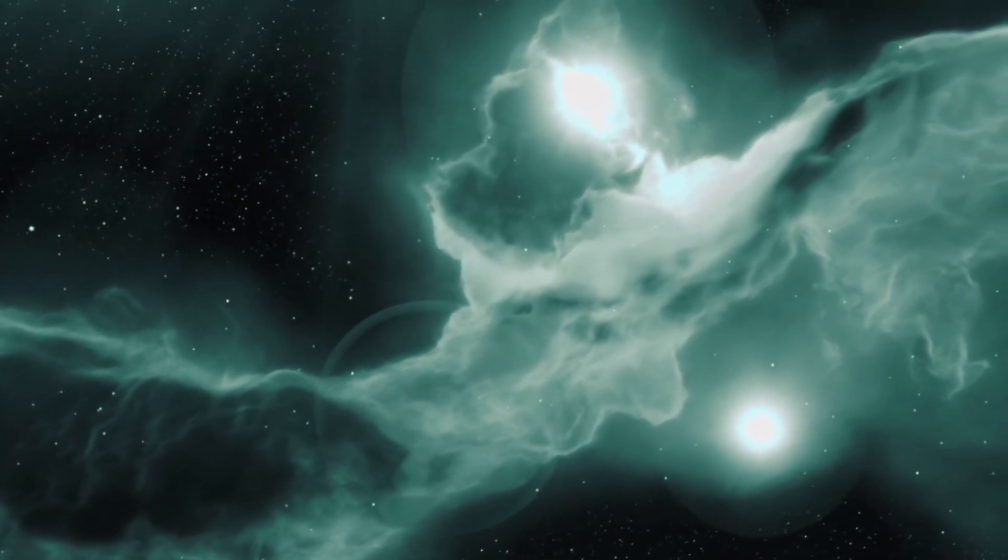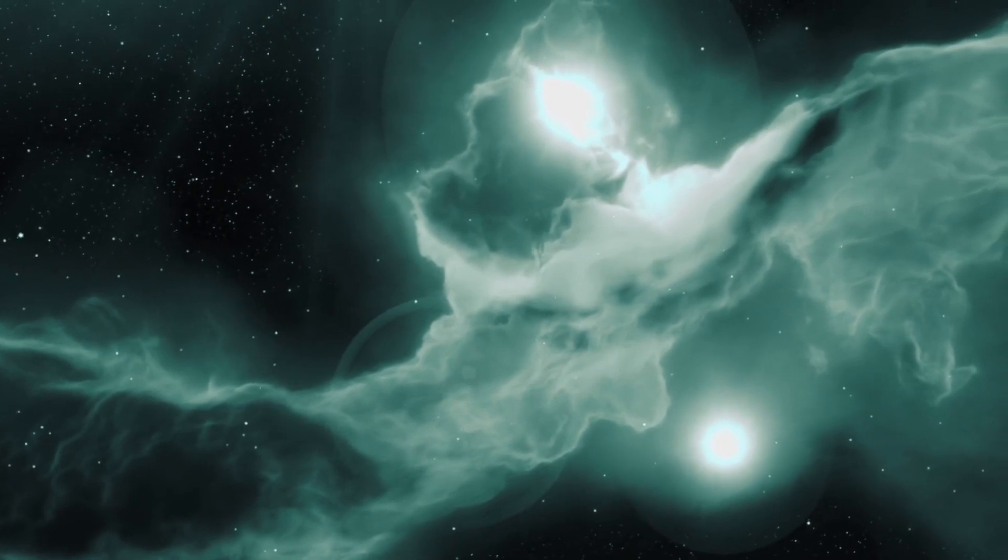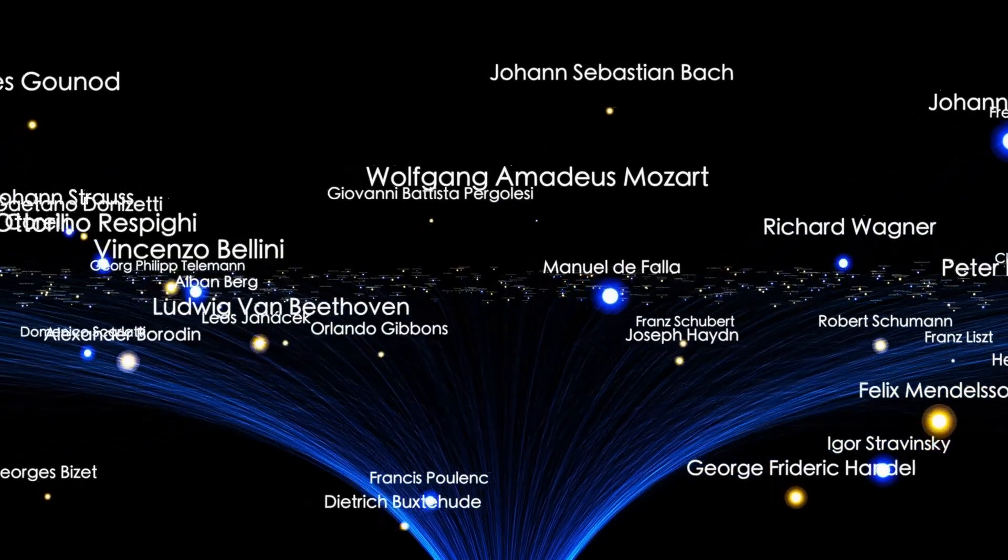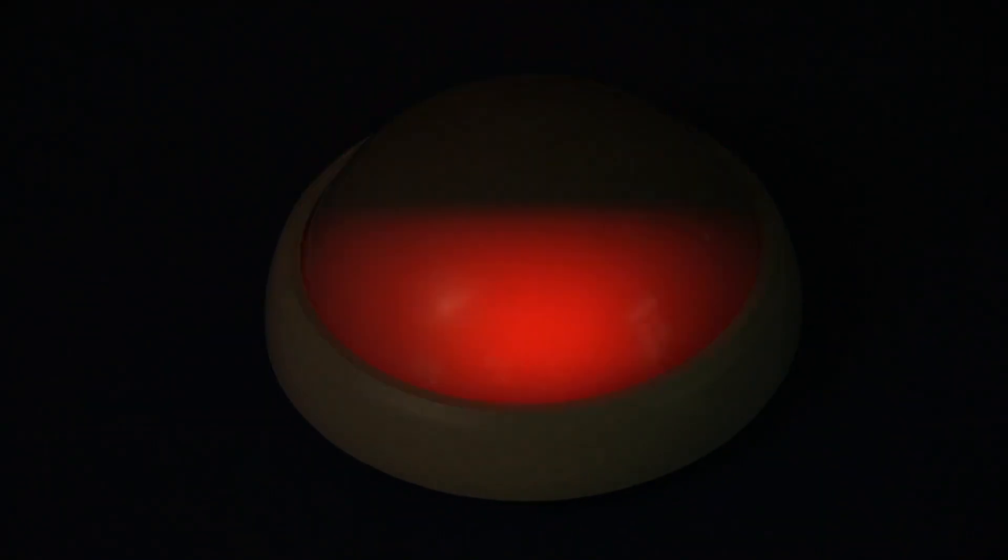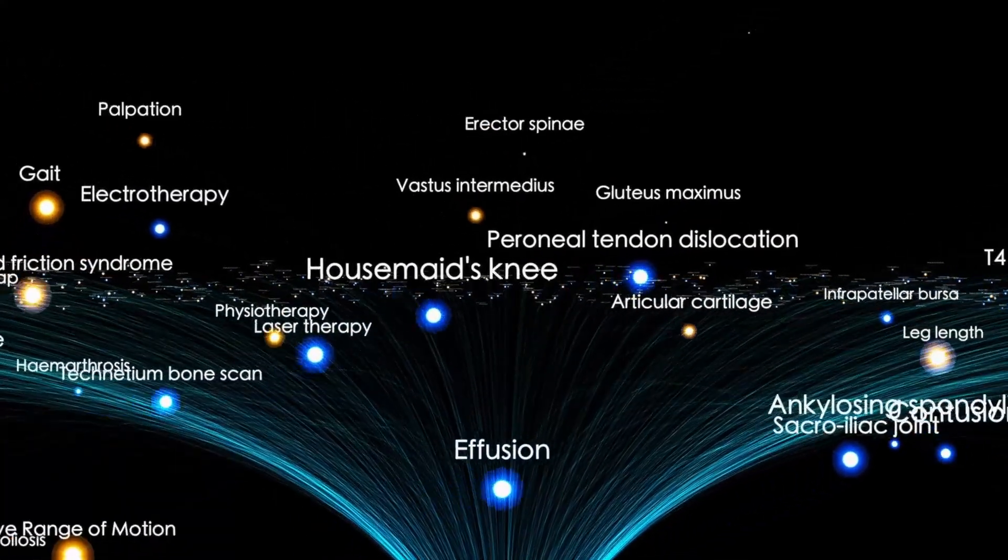David Kipping, an astronomer at Columbia University, described the planet where these lights were found as particularly complex. This is because unlike most rocky planets that absorb sunlight and emit energy in the form of infrared, this exoplanet exhibits a different behavior due to its unique relationship with its parent star, Proxima Centauri.